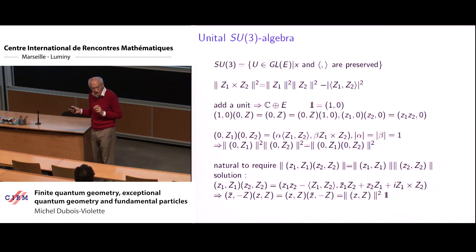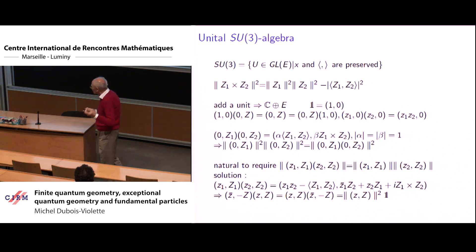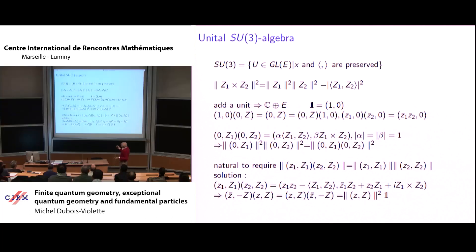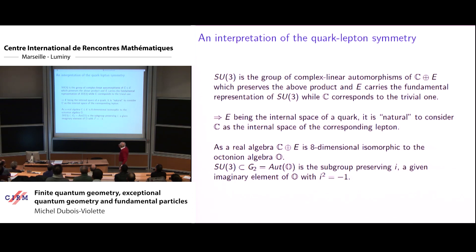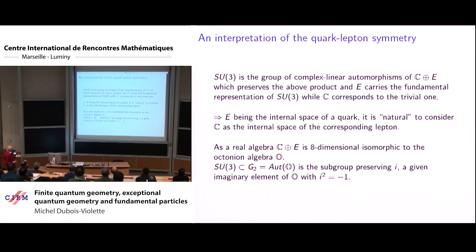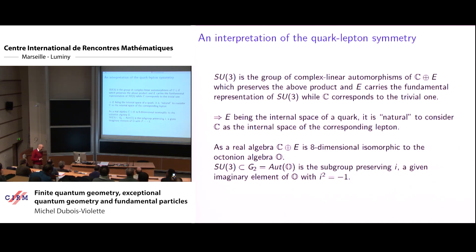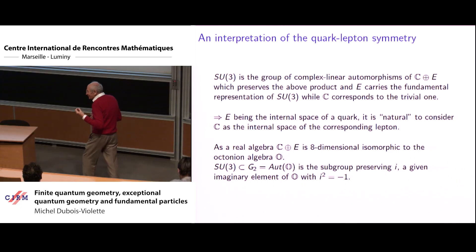SU(3) is the automorphism of the octonion algebra that preserves the splitting C ⊕ C³ of the octonions. A choice of one imaginary octonionic unit plays the role of i. I start from C³ on which SU(3) acts as the space of quarks, and now I have the factor C. The factor C does not see this SU(3) because SU(3) preserves the unit. So the part corresponding to quarks and the part corresponding to a complex C naturally corresponds to the lepton associated to the quark.